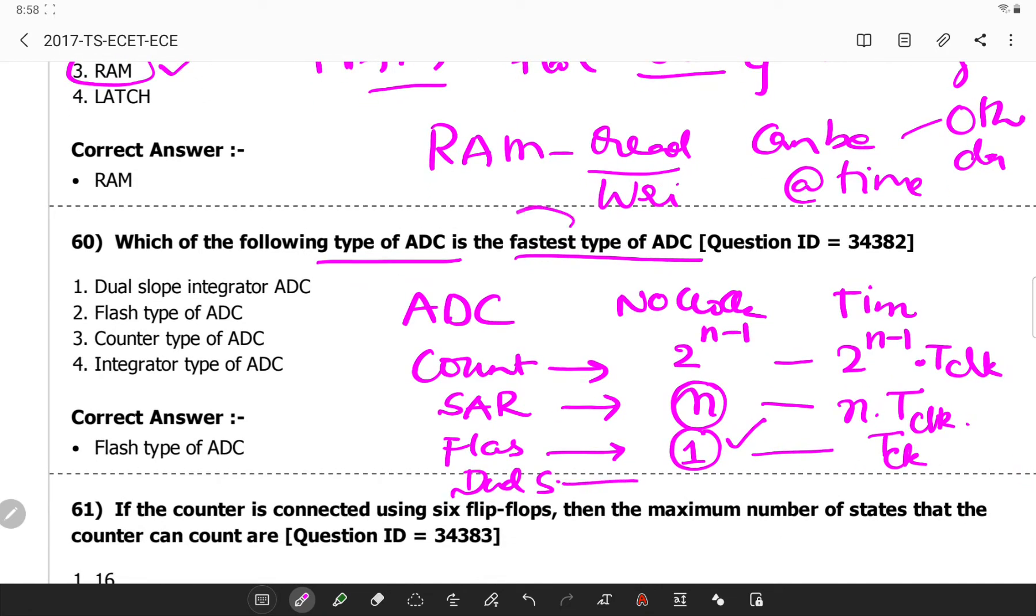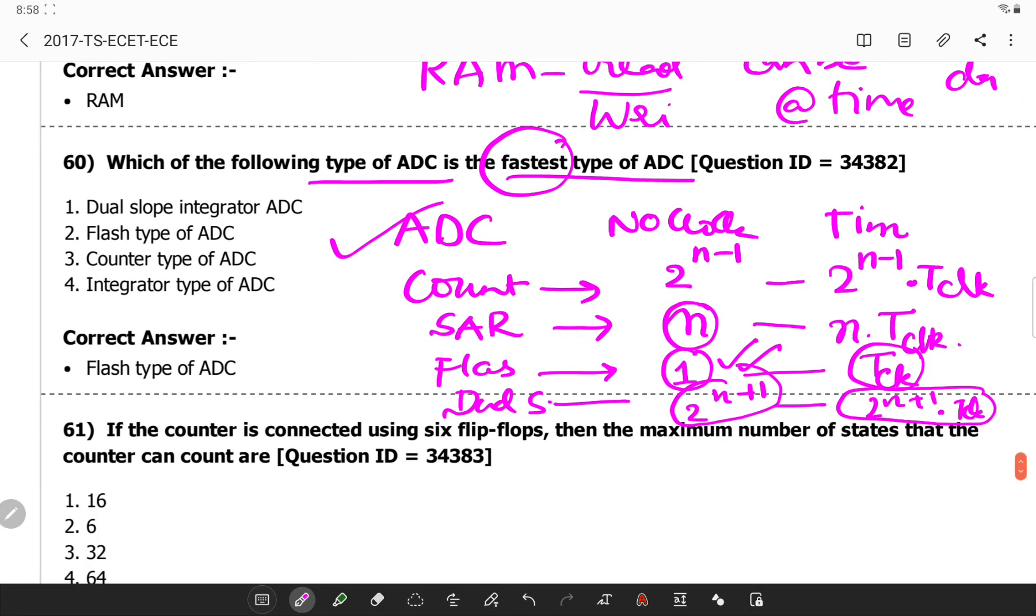Now if you observe which is the fastest, it will take only single clock. So flash is the fastest. Whereas 2 power N plus 1 cycles will be taken in case of a dual slope and the time taken is 2 power N plus 1 into T clock. So remember the fastest is T clock and the slowest is dual slope ADC. Try to remember this table, it is very much useful.